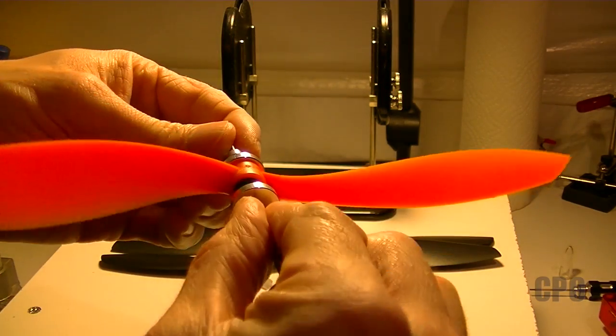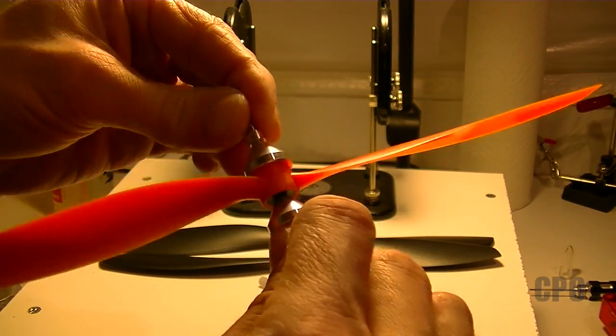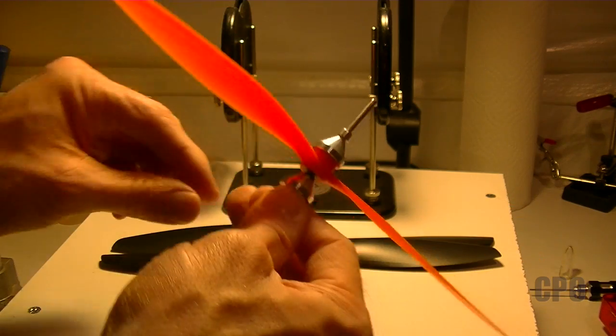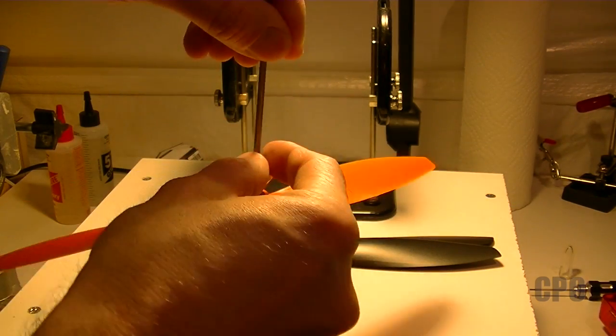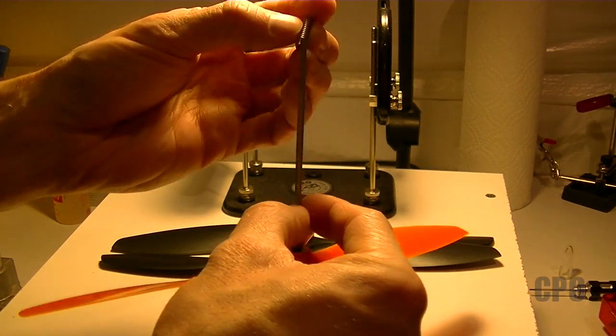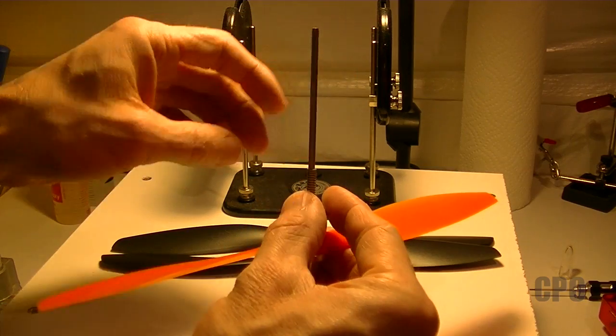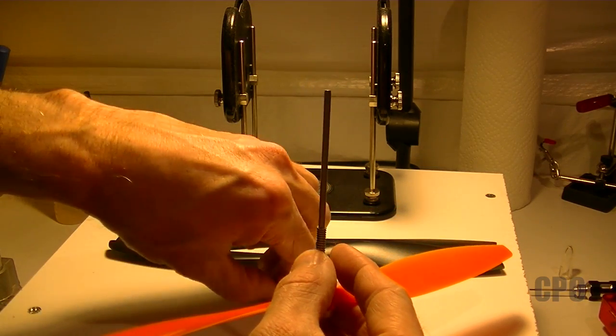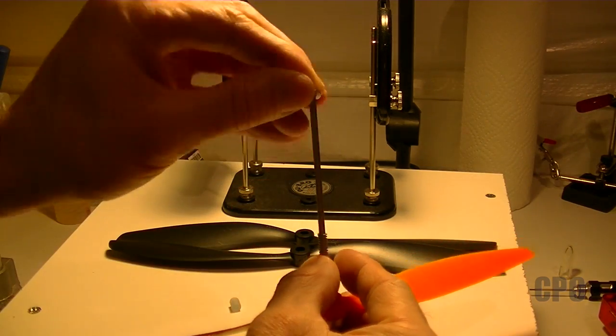When you mount the prop on the motor, you're actually using the flat front surface anyway, so this isn't much different than how it would be mounted. In APC props, this is almost critical. For these props, not necessarily so, but I'm going to go ahead and do that way because I'm a creature of habit.